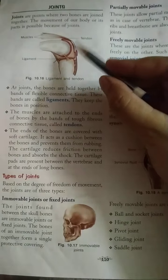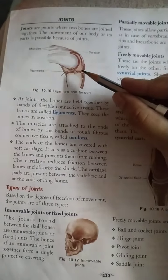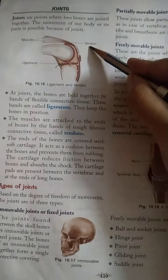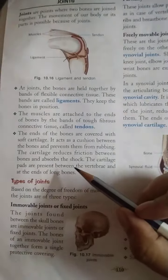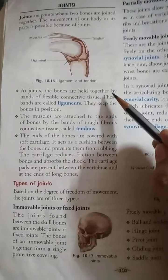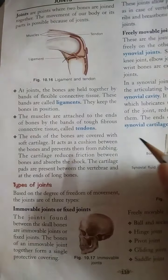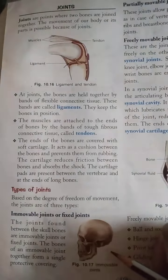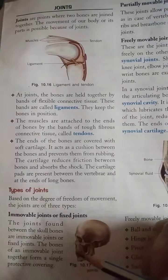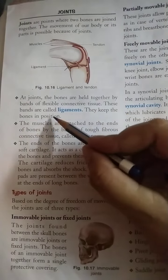Look at this figure — this is a knee joint. Basically, the joint has a ligament and tendon which help the joint to move. Now we will discuss what a ligament is and where it is located in the joint. The bones are held together by a band of flexible connective tissue; these bands are called ligaments. The ligament is present in between two bones, and its function is to keep the bones in position.